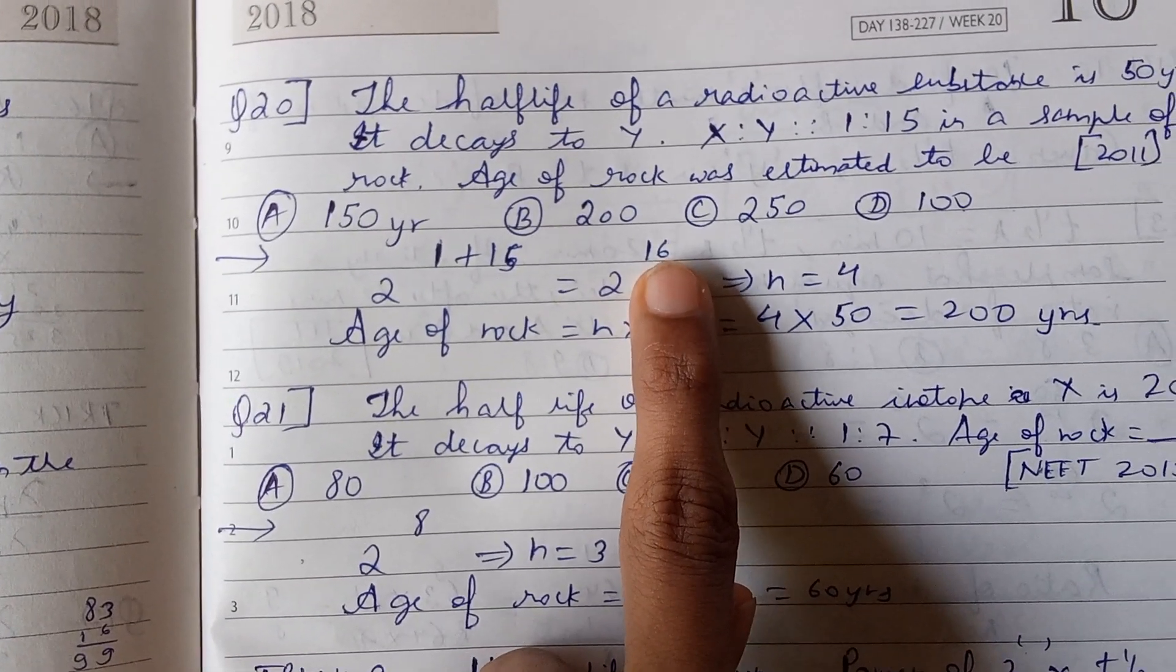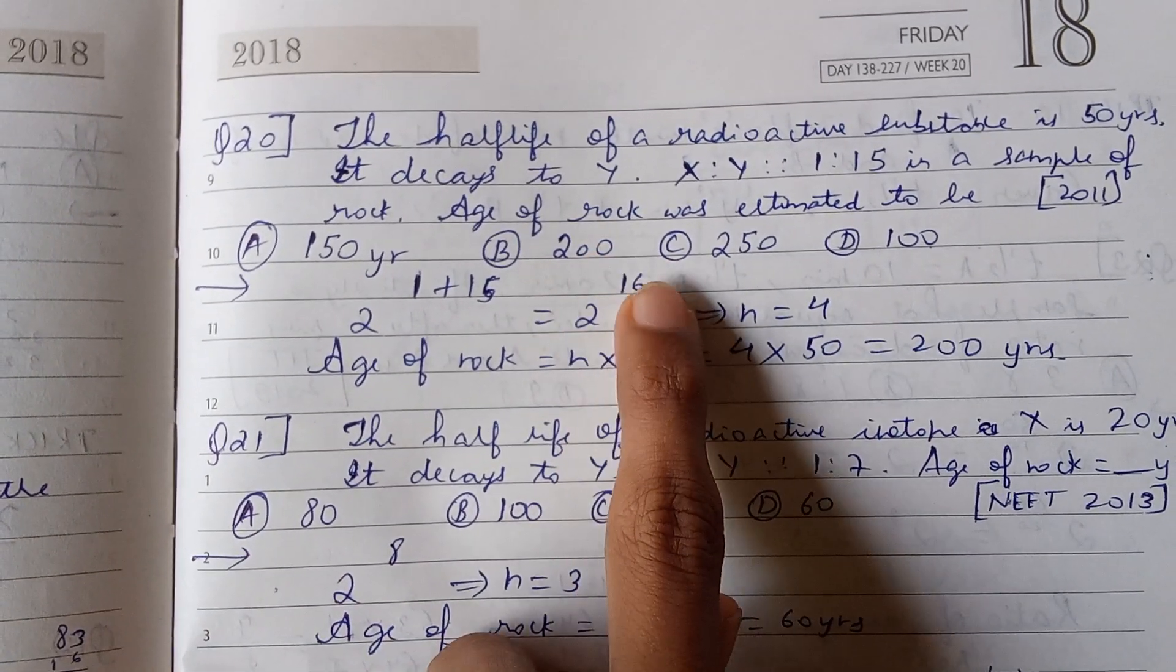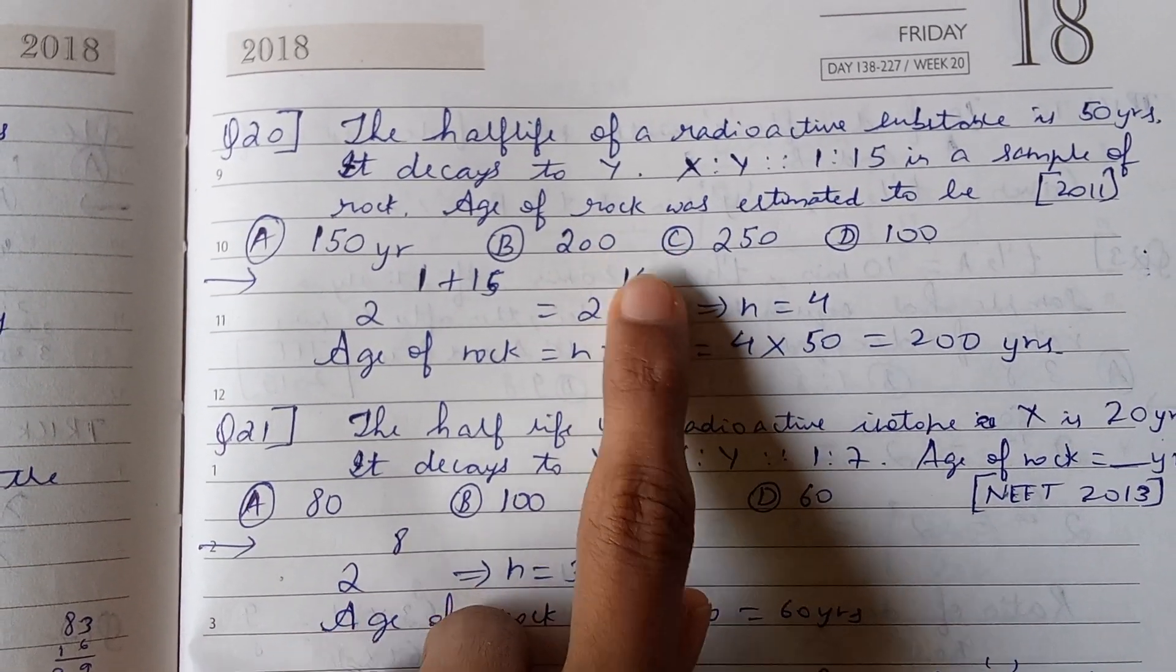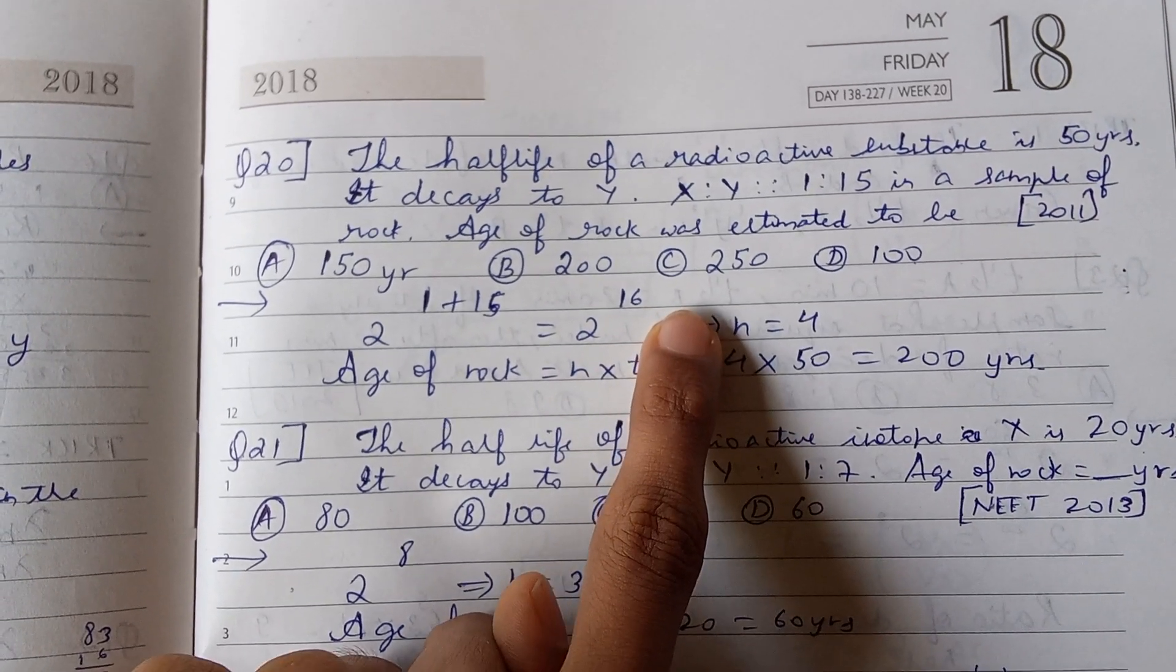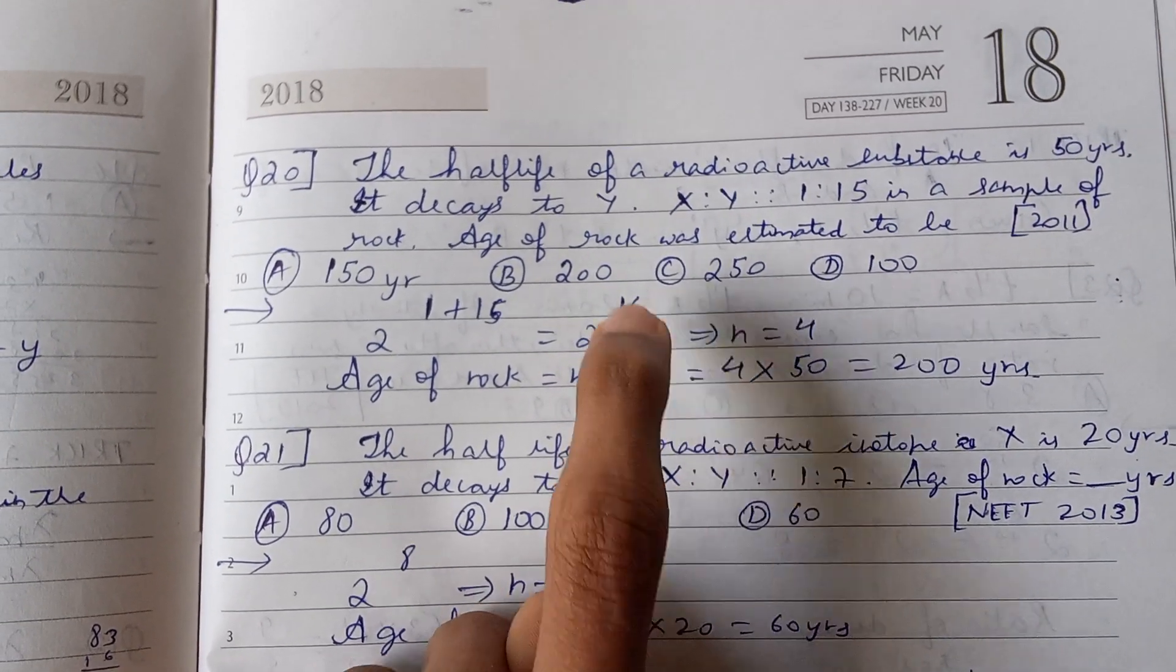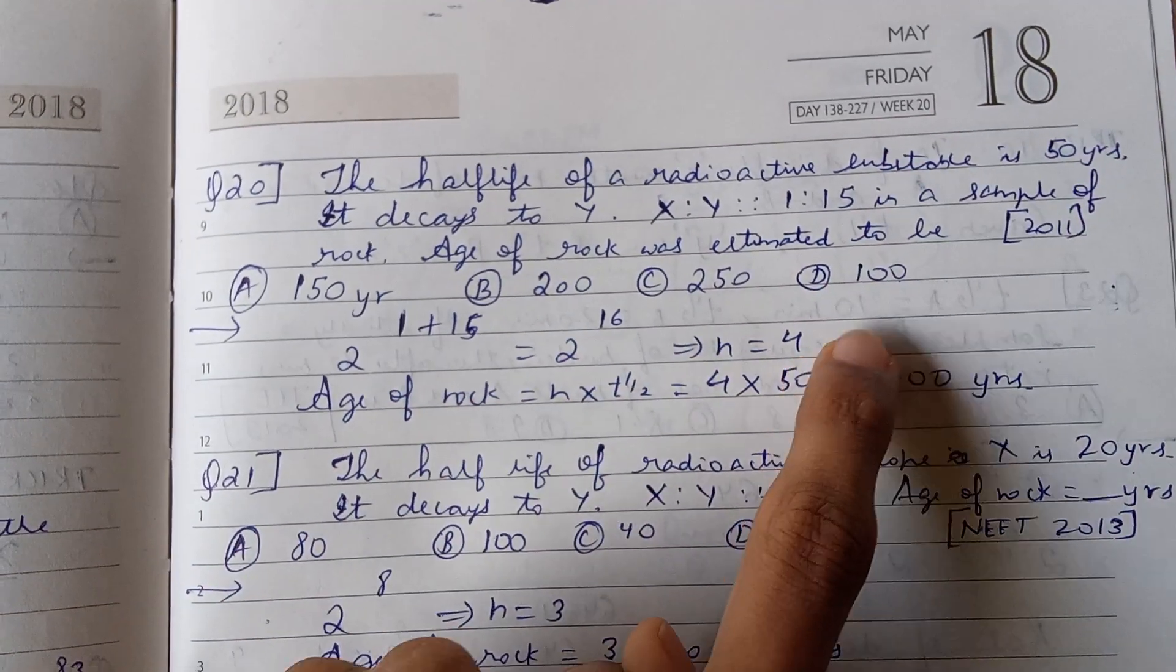We need to find the power. The power will be something squared, so it is 2^4. See, the power is 16, which is 2^4, so n equals 4. Then we have to do 4 times 50, which is 200 years.